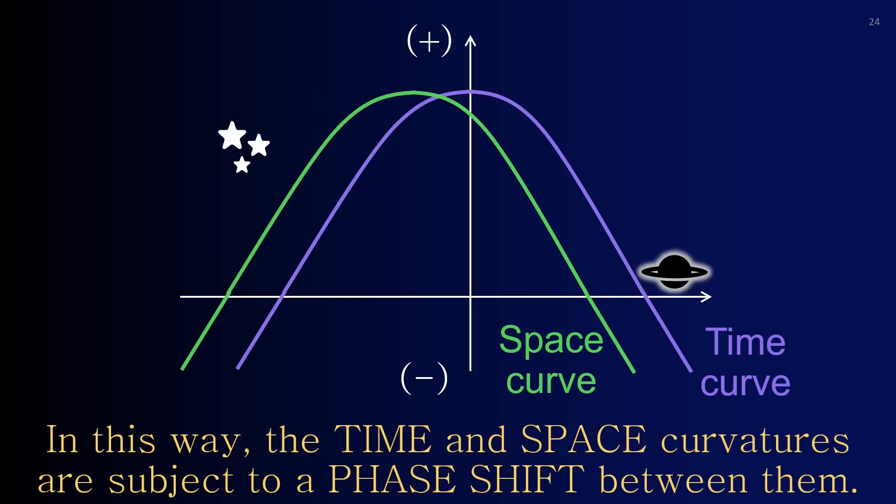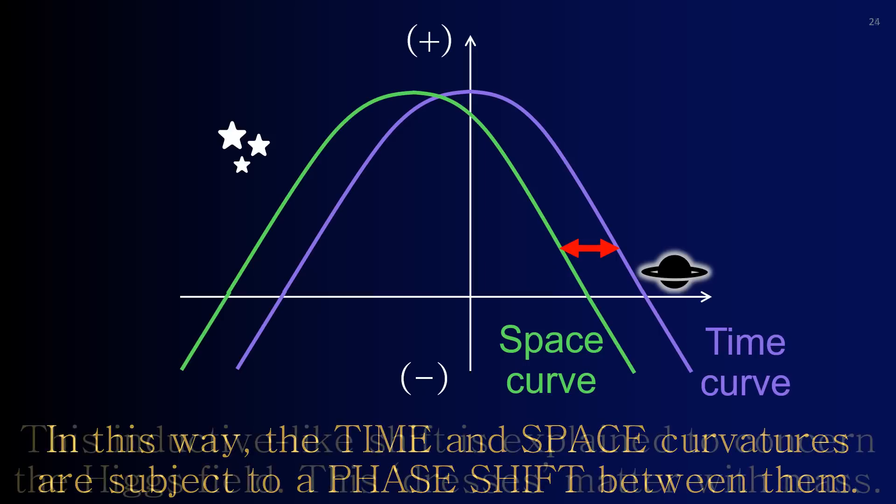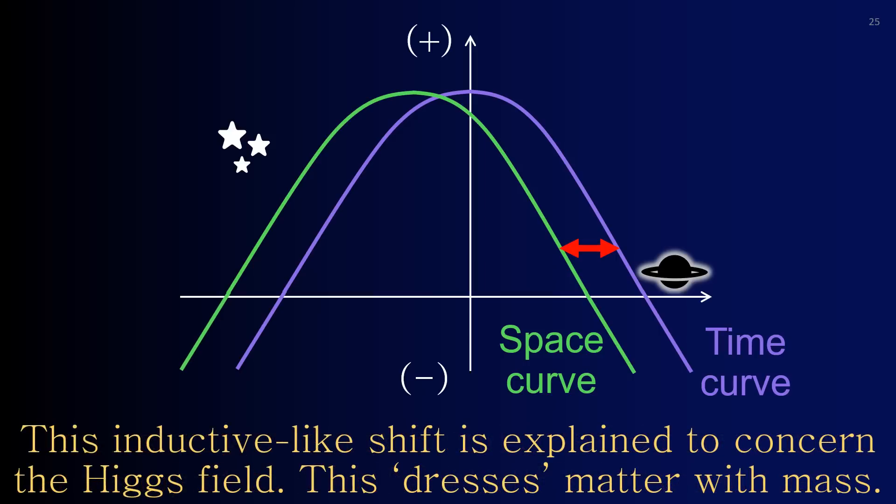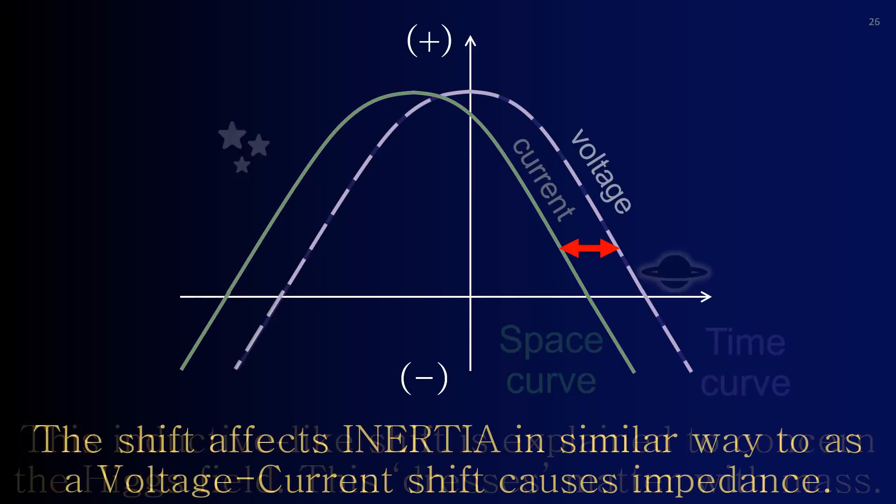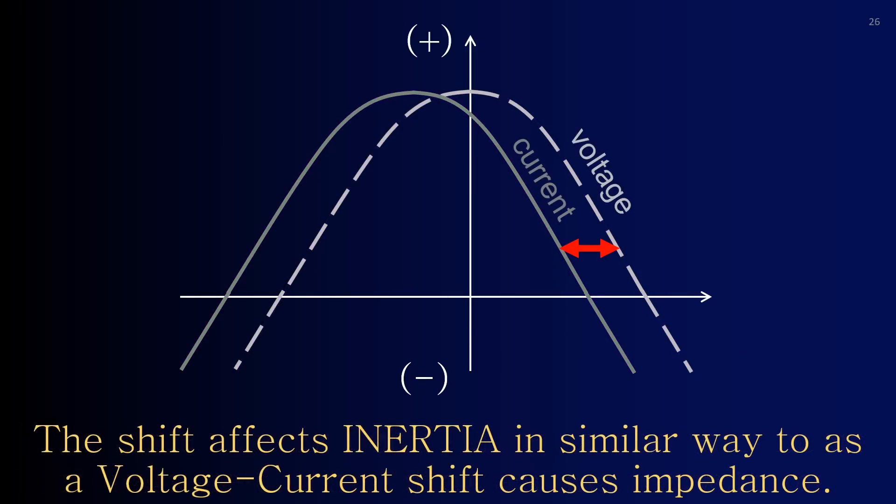In this way, the time and space curvatures are subject to a phase shift between them. This inductive-like shift is explained to concern the Higgs field. This stresses matter with mass. The shift affects inertia in similar way to as a voltage-current phase shift causes impedance.